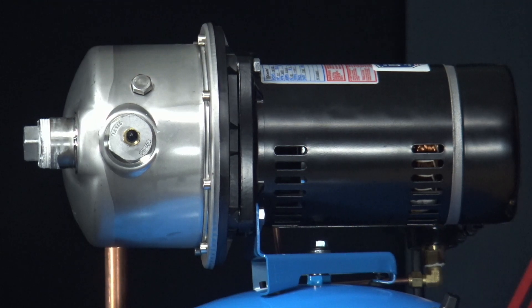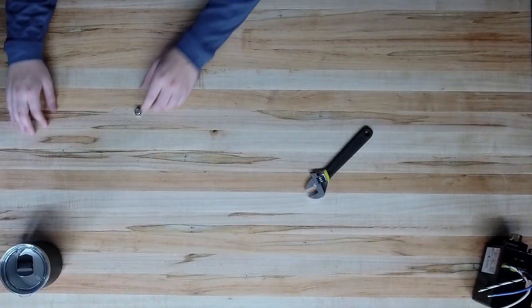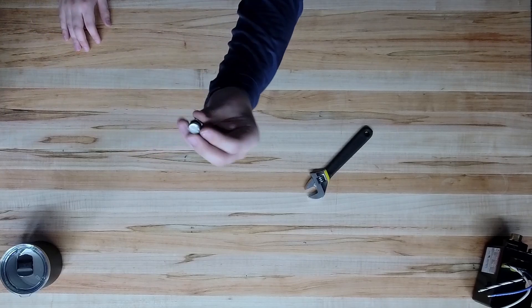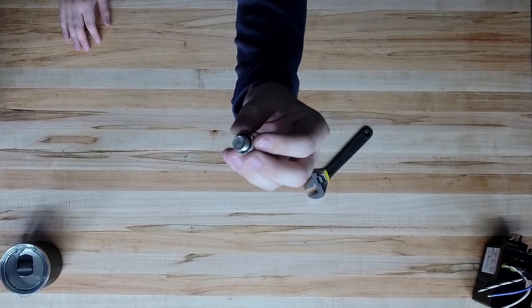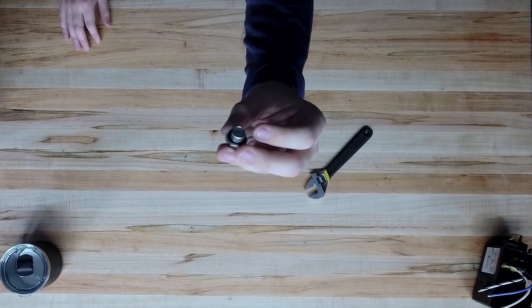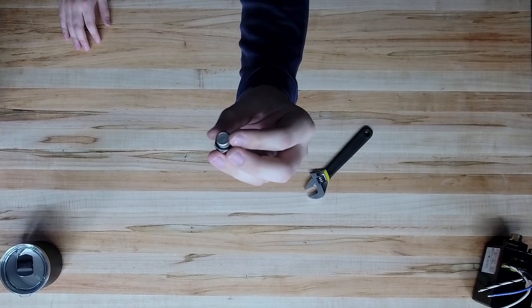Now that half turn is pretty important, there's a reason for that. So this screw is actually pretty small, it's only one and a half threads. The reason why we only want to turn it one half turn is because we don't want it to come out of the housing of the pump.